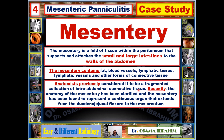Anatomists previously considered the mesentery to be a fragmented collection of intra-abdominal connective tissue. However, recently the anatomy of the mesentery has been clarified, and it has been found to represent a continuous organ that extends from the duodenojejunal flexure to the mesorectum.